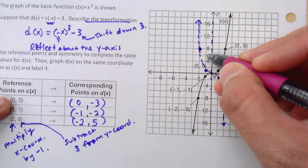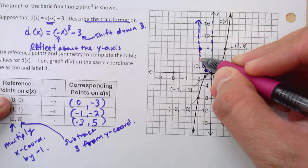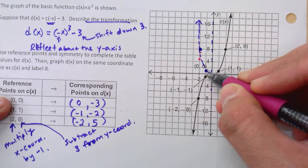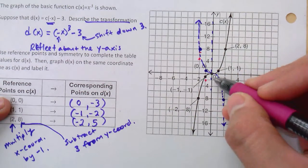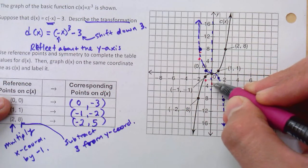So we'll have to just count 3 carefully down. So like half of these increments are 1. So 1, 2, 3, that point lands there. This point goes 1, 2, 3, lands there. This point goes 1, 2, 3, lands there.